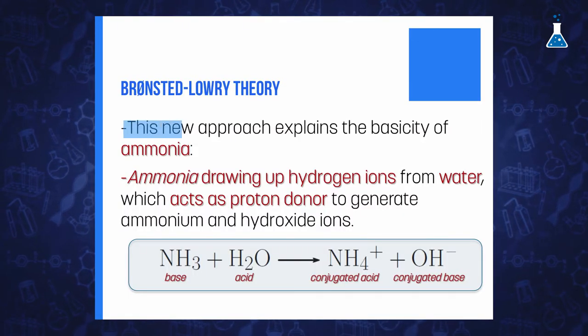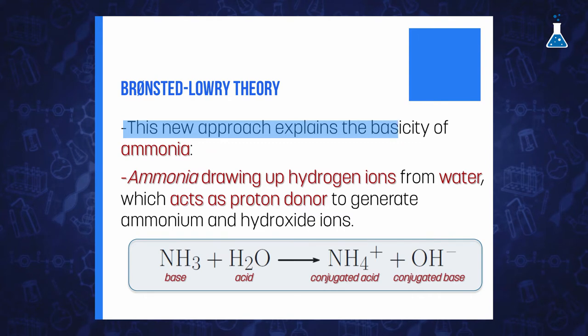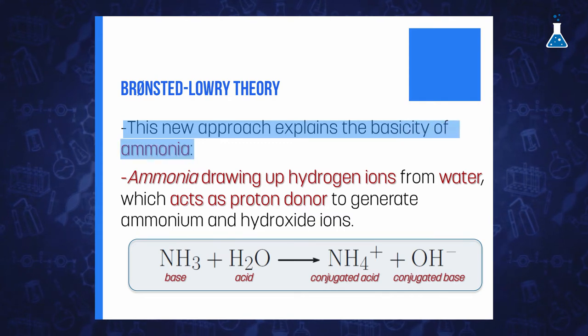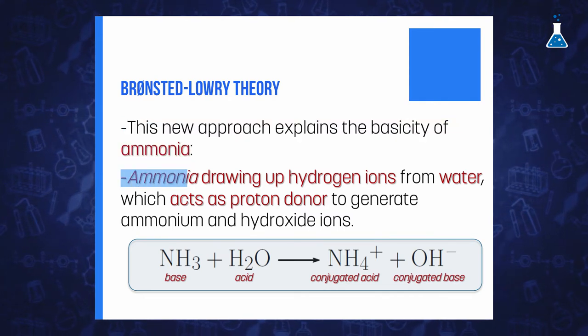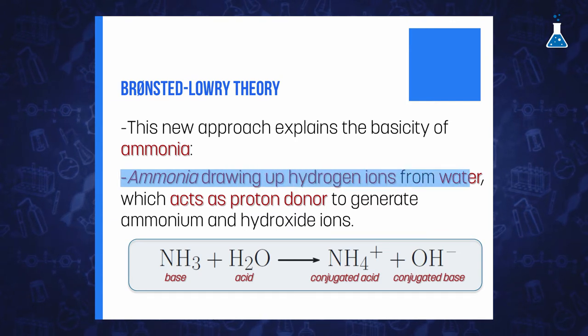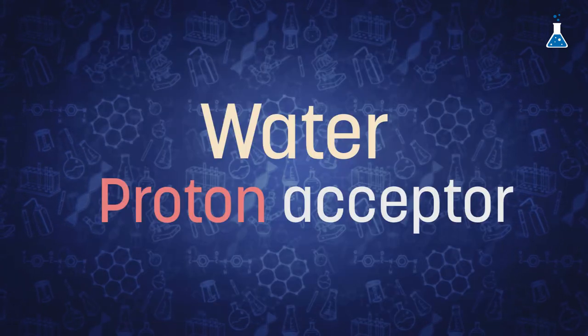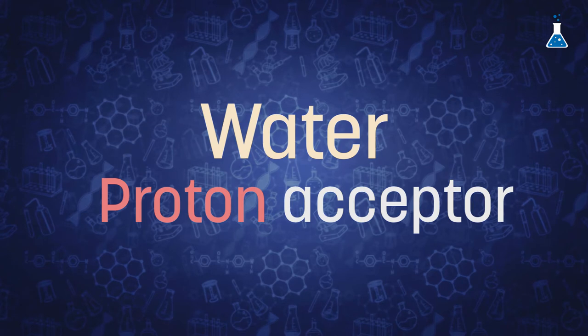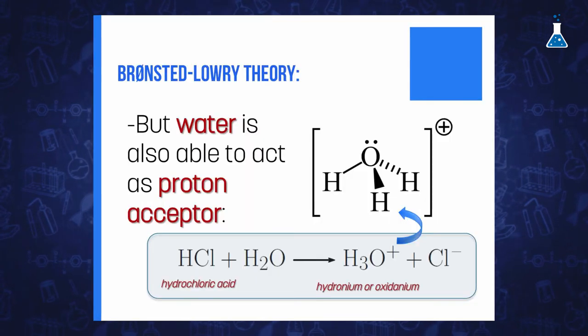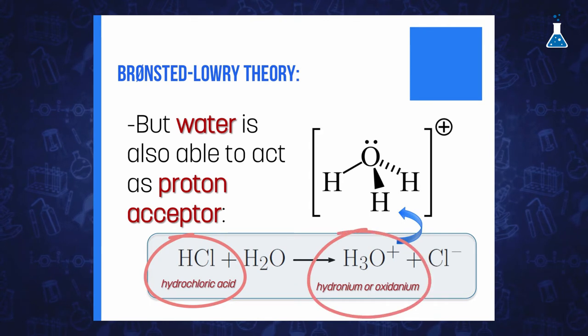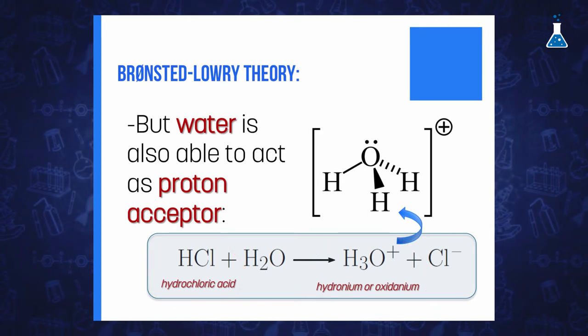The acid or base and its conjugate are associated with one another in what is called a conjugate pair. This new Brønsted-Lowry approach solved the problem of explaining the basicity of ammonia with Arrhenius theory. Ammonia acts as a base, drawing up hydrogen ions from water, which acts as a proton donor to generate ammonium ion and hydroxide ions. But water is also able to act as a proton acceptor, for example in front of hydrochloric acid, to generate the hydronium ion — also named oxydanium, according to the new IUPAC recommendation.